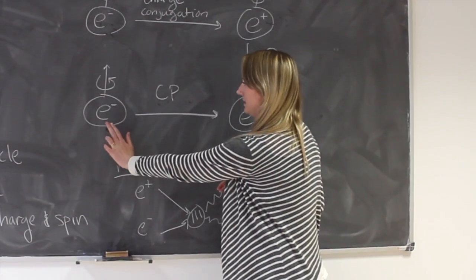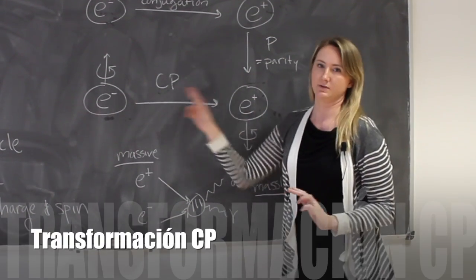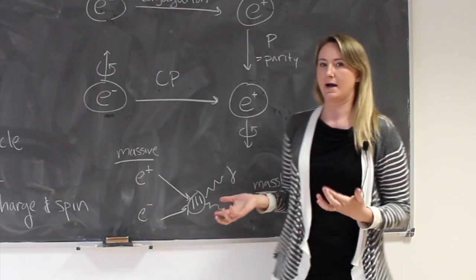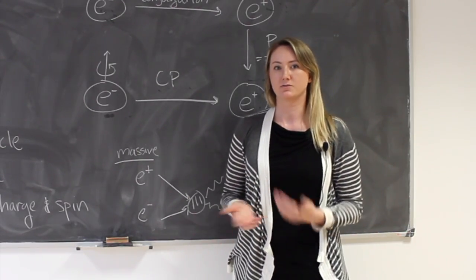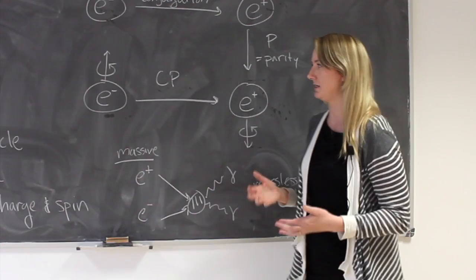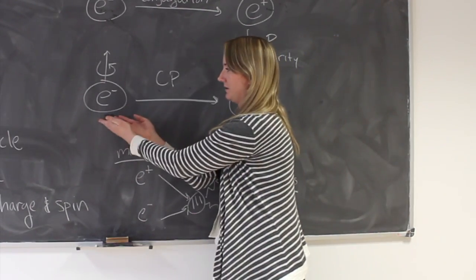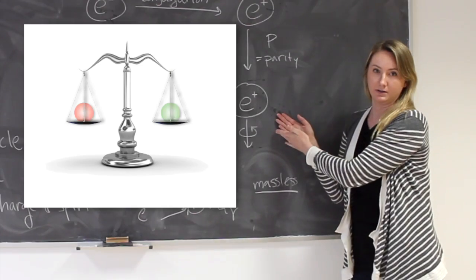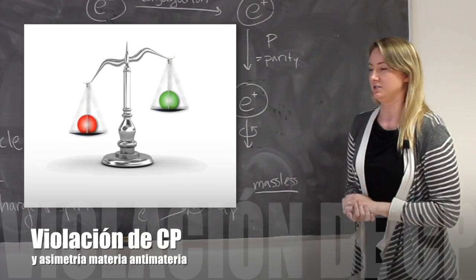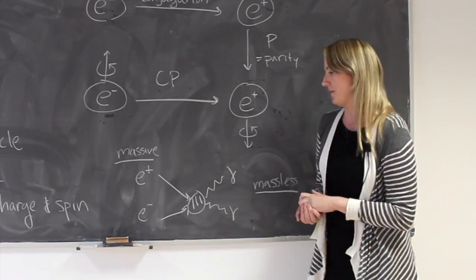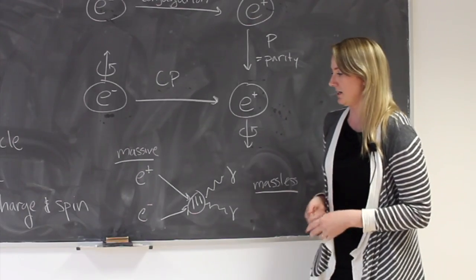To go from the particle to the antiparticle, you do a CP transformation. When you ask what is antimatter's role in the laws of the universe, the question is: do the laws of nature treat this particle and this particle the same way? The answer is they don't.